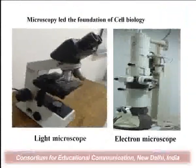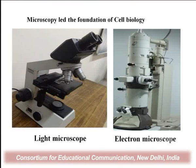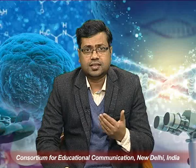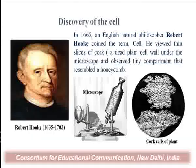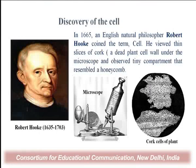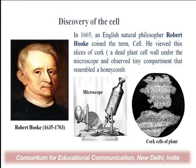The study of the cell depends on microscopic observation. With the invention of microscopy — an instrument which magnifies smaller objects — the structure and function of cells is elucidated using light microscopes and electron microscopes. The discovery of the cell is credited to the first biologist Robert Hooke, who coined the term 'cellula.' He viewed a thin slice of cork under the microscope and observed tiny compartments, which he called cells.